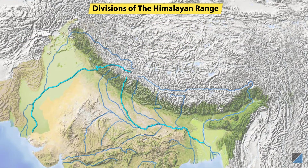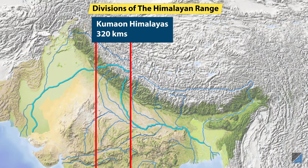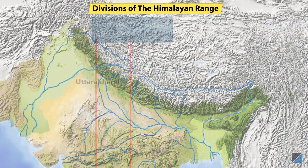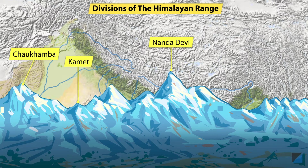The next regional demarcation is the region between the Satluj River and the Kali River. It covers a distance of about 320 km. The part of the Himalayas that lies between these two rivers is known as the Kumaon Himalayas and it lies primarily in the state of Uttarakhand. Some of the important peaks in this region are Nandadevi, Chaukhamba, Kamet, Trishul and Panchachuli.